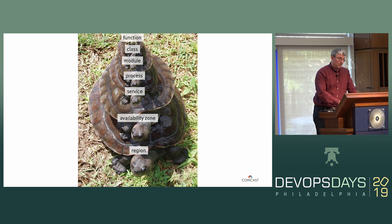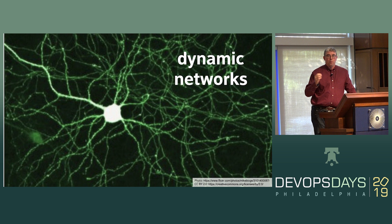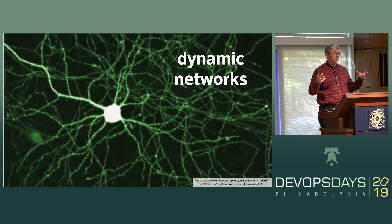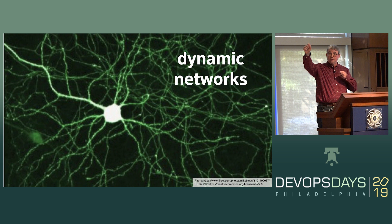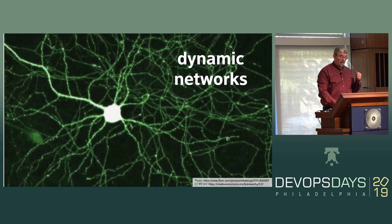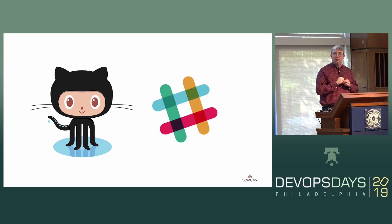Complex systems also have dynamic networks of interactions where connections are formed and broken, and some connections are close while some are far. This is actually the way our brains are set up — we have tons of neurons that are connected to nearby neurons, but some also have really long-distance connections to other parts of our brain. Recently we've seen tools show up that have given us a better opportunity to do this in our organizations. How many people have heard of Conway's Law?